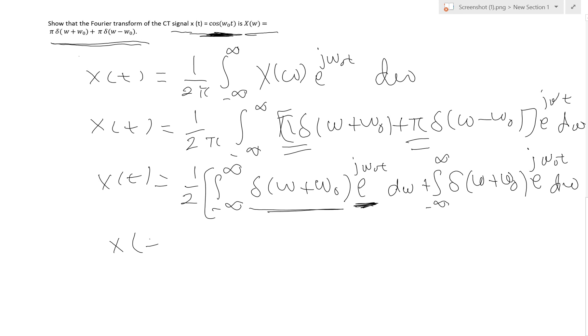So we end up with this answer. If we substitute ω with ±ω₀, we get 1/2 [e^{jω₀t} + e^{-jω₀t}].